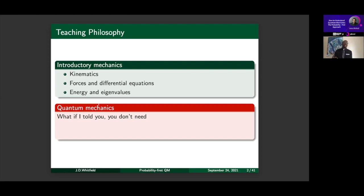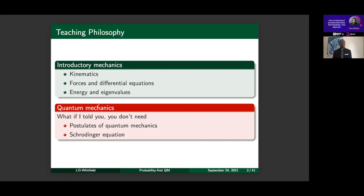However, introductory quantum mechanics quite often starts from a very different perspective. I'm going to tell you: you don't need the postulates of quantum mechanics — a lot of books start with postulates. I went back and looked at all my old quantum books: half started with postulates, the other half started with the Schrödinger equation. The Schrödinger equation you also don't need to begin discussing quantum mechanics. I want to convince you that you don't need either of these two things — they show up naturally from the probability-first point of view.